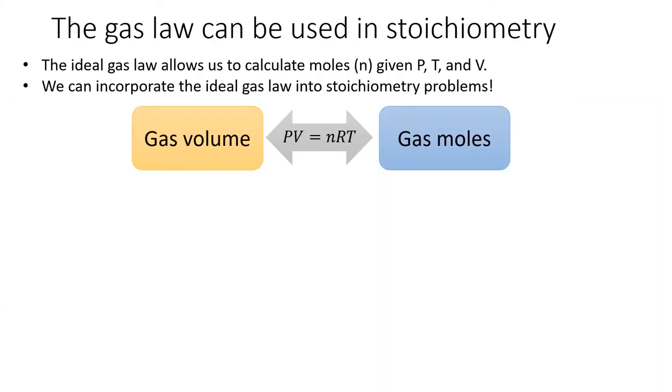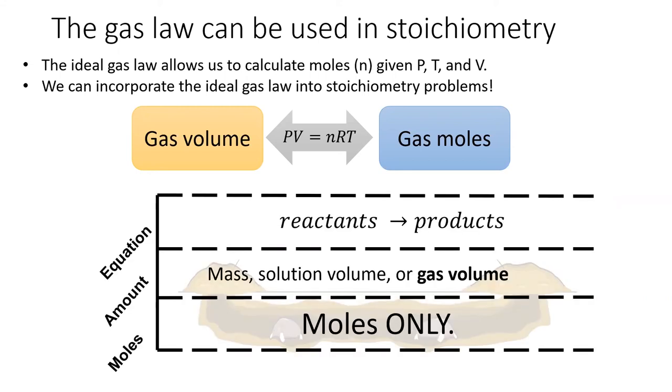We can also combine the gas laws with reaction stoichiometry. The ideal gas equation, PV equals nRT, allows us to calculate moles from volume or volume from moles. This allows us to add volume of gas to the amounts row in the mole tunnel visualization. We use PV equals nRT to convert gas volume to gas moles.